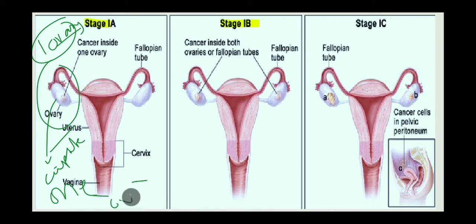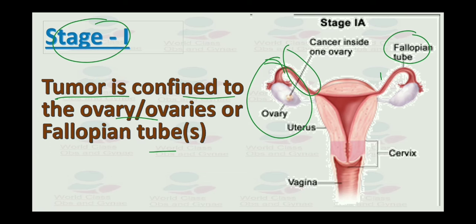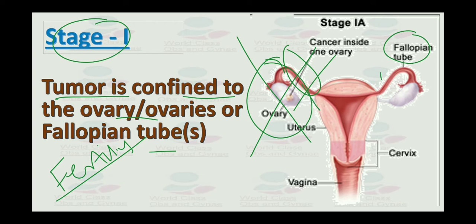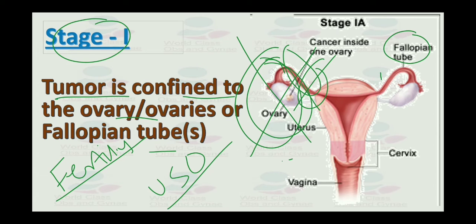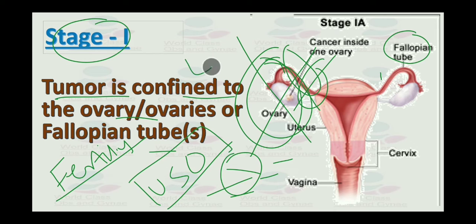How would you manage stage 1 ovarian cancer? That depends upon the fertility intention of the woman. If she wants more children in the future, we just have to remove one ovary along with the fallopian tubes — unilateral salpingo-oophorectomy — along with peritoneal biopsies and lymph node dissection.